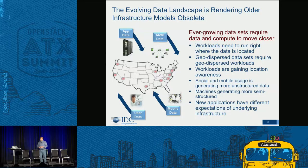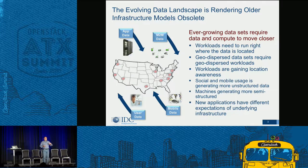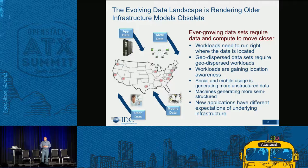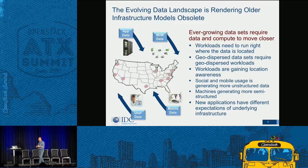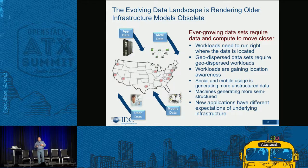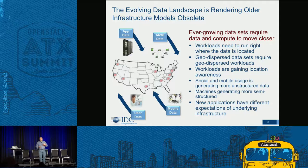To set the stage, we are talking about an evolving data landscape. On stage today we talked about different types of applications creating different types of data sets, and it's all about moving data and compute closer together. We need to run workloads right where the data is located. We want a geo-dispersed infrastructure with location awareness — app data, M2M data, IoT, mobile — all of this coming together.